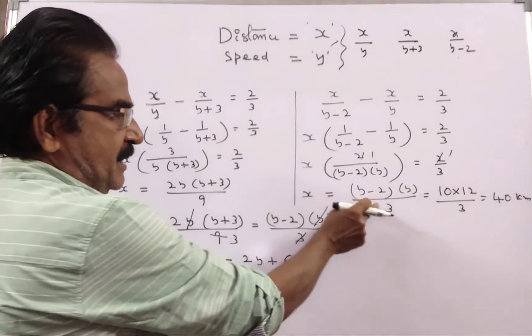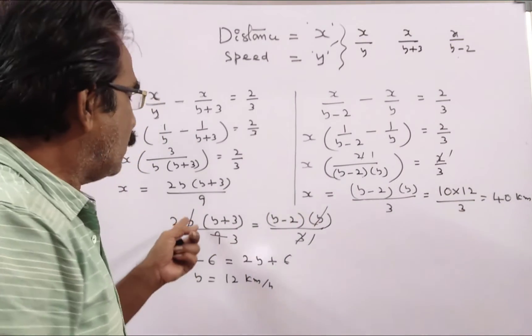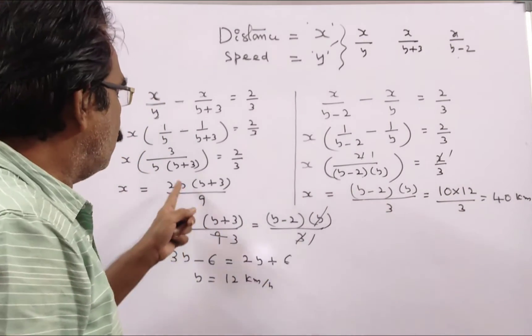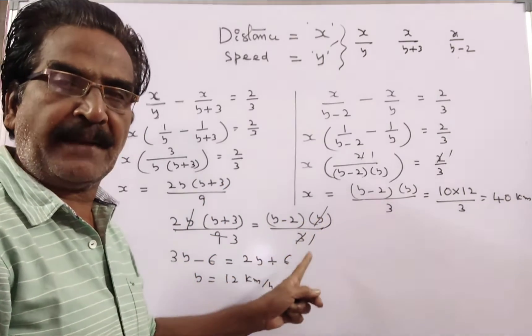So this is x, this is x, these two are equal. So I am equating these two. So 2y into y plus 3 by 9 is equal to y minus 2 into y by 3.